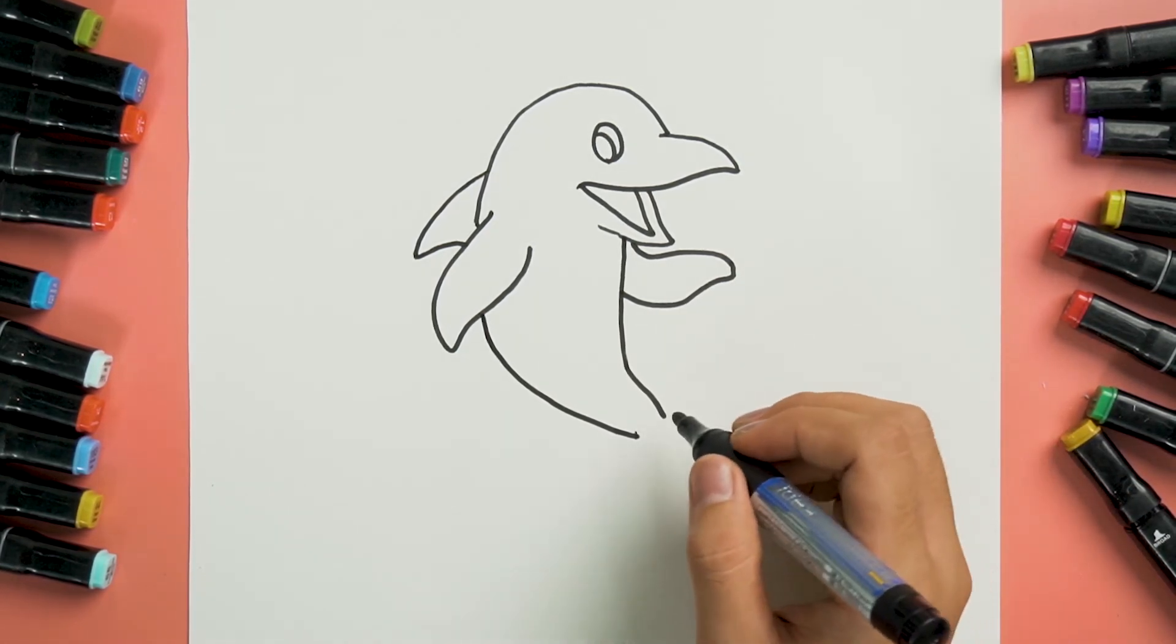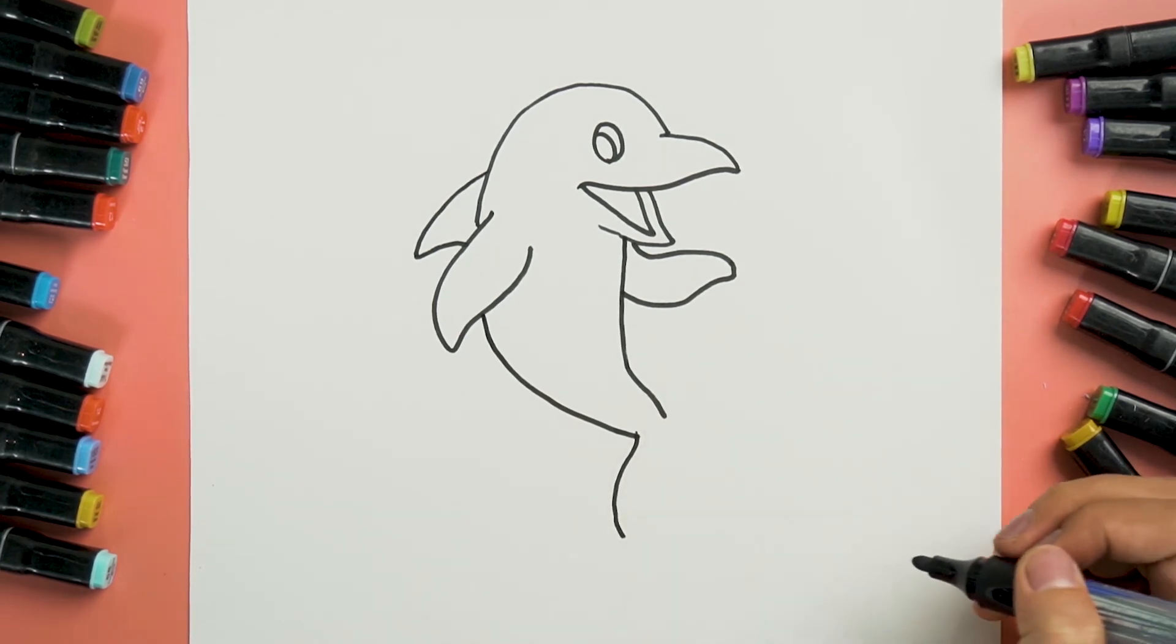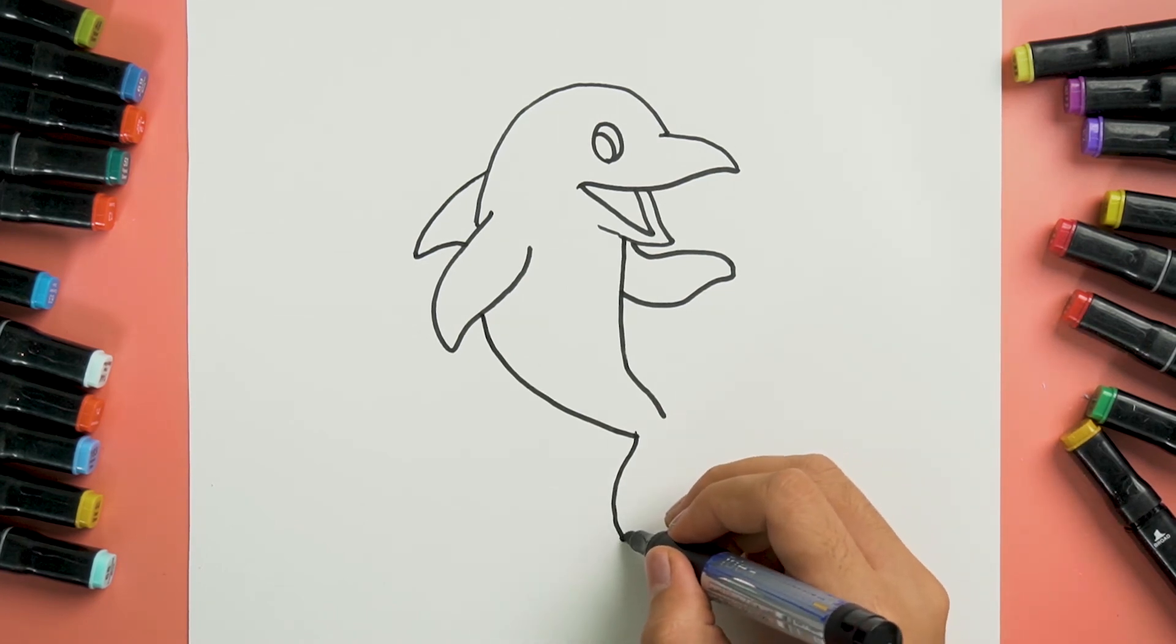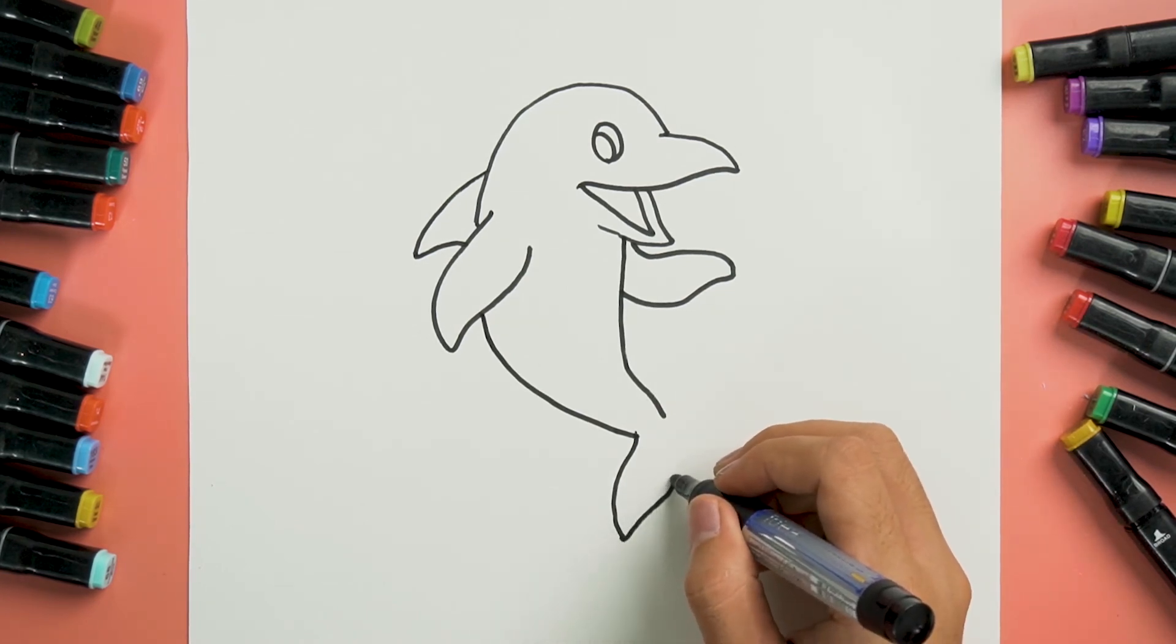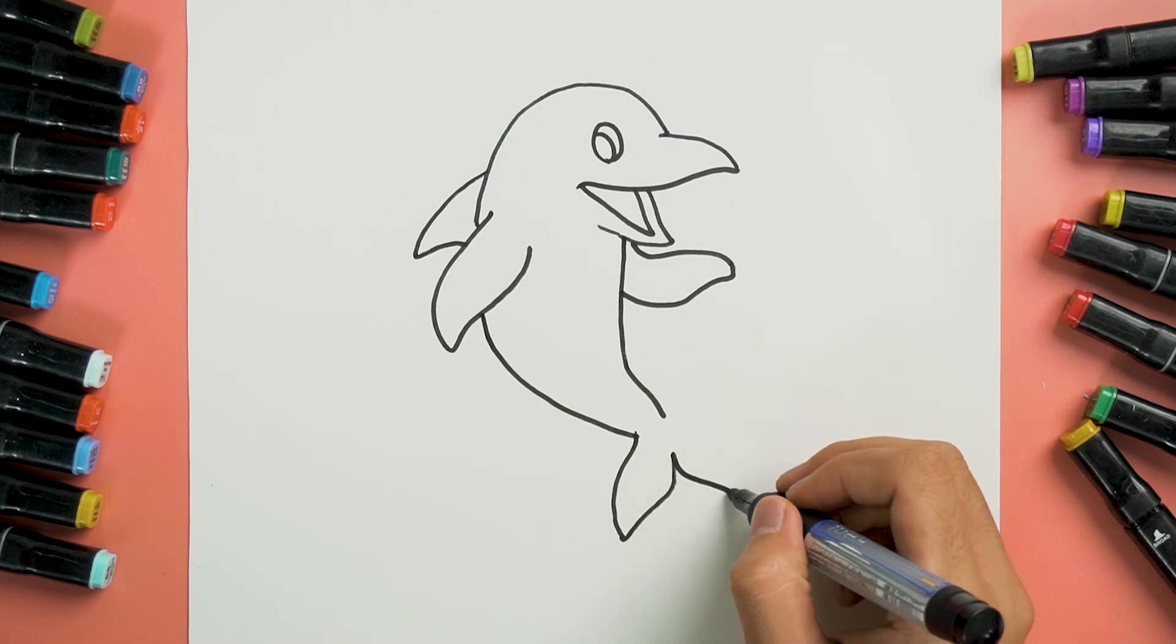Okay, now we will give him a tail by drawing a curve like this and another curve up. And draw the same curve on the other side of the tail and connect it like this.